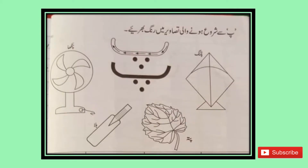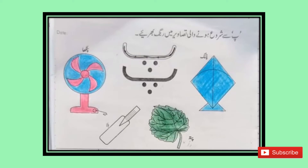اب ہم آتے ہیں پے کی لکھائی کی طرف۔ پے سے شروع ہونے والی تصاویر میں رنگ بھریے۔ پے سے پتانگ، پے سے پنکھا، پے سے پتہ۔ اس طرح رنگ بھرنا ہے: پے سے پتانگ پر رنگ بھریں، پے سے پنکھے پر، پھر پے سے پتے پر۔